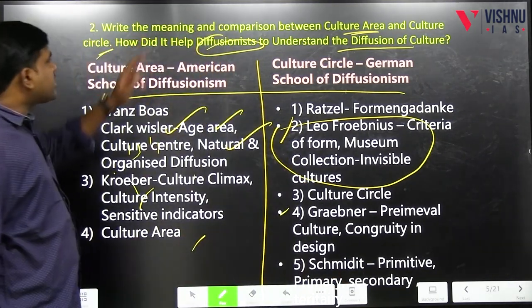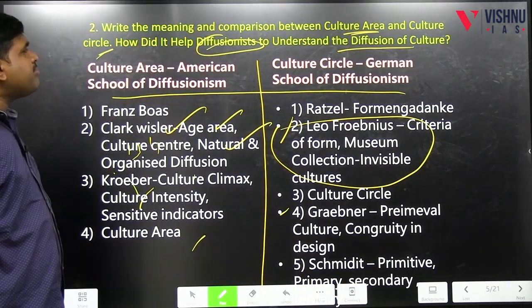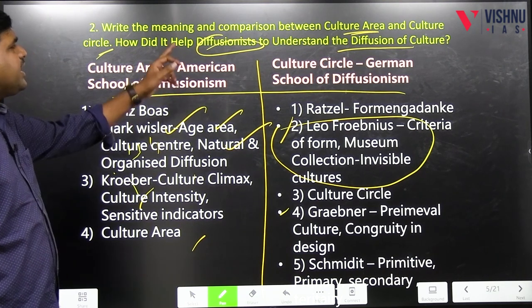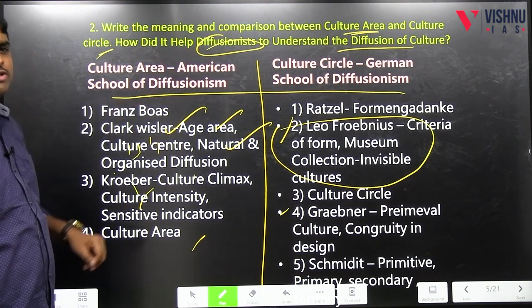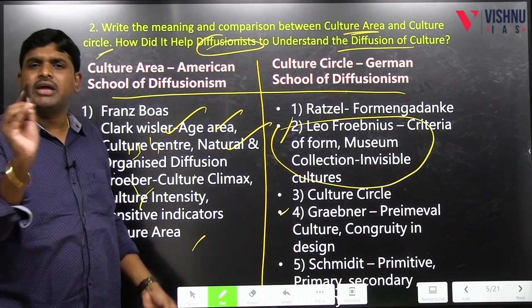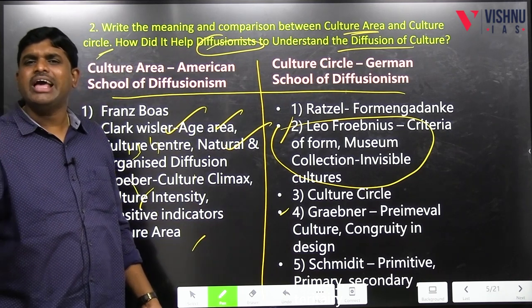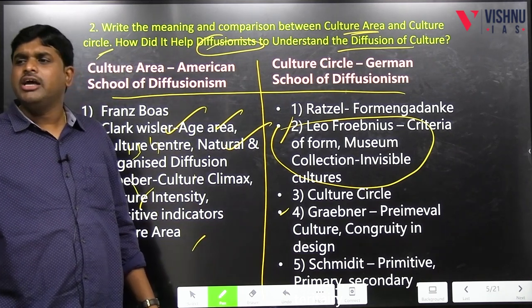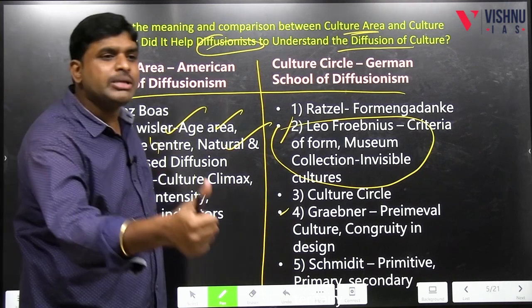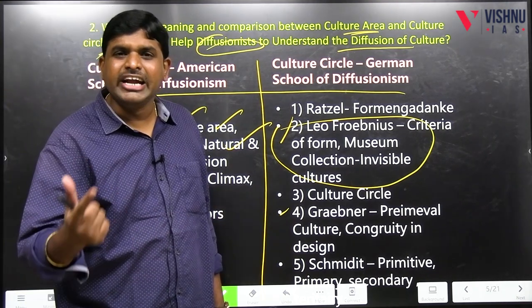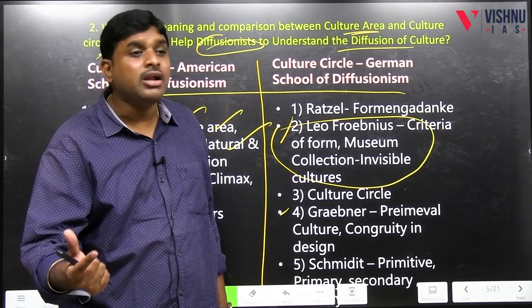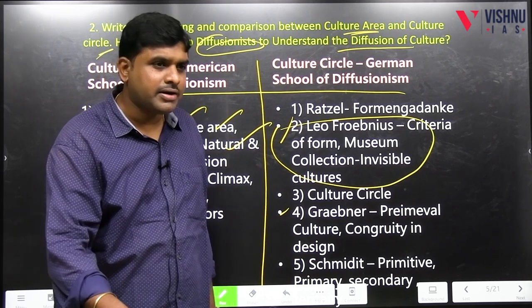So the question is: write the meaning and comparison between culture area and culture circles, and how did it help diffusionists understand diffusion? You will then keep the heading: 'How did it help diffusionists to understand?' Number one: museum methodology of Leofrebenius. Number two: congruity of design — among the things available, diffusion happened.